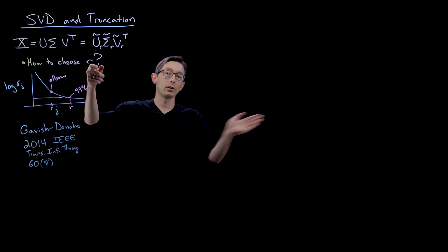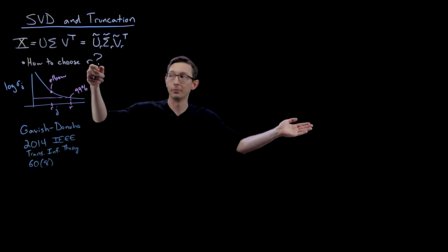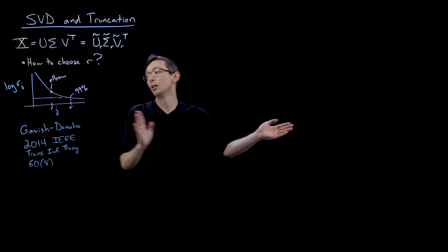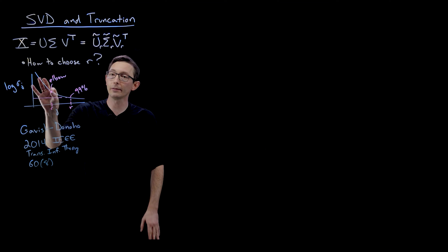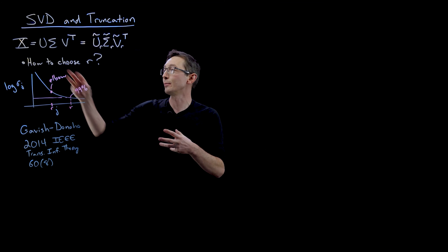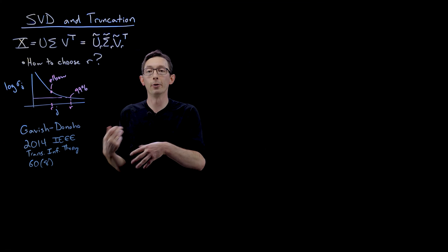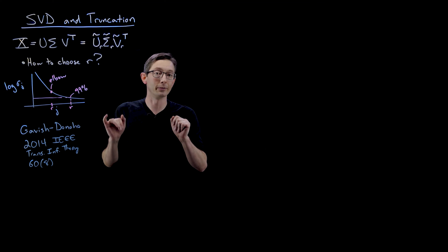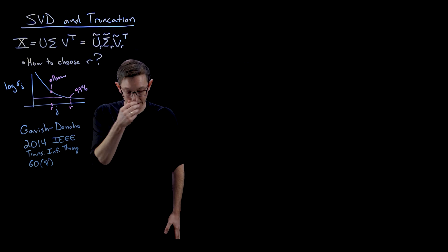If I have more rank r, I'll have a more accurate but more complex model. If I have lower rank r, I'll have a less accurate but less complex model. And so we're looking for this sweet spot where we get the most of the information in x but without overfitting to maybe the noise in x or some of the little features we don't care about. And that's kind of what they are getting at here.